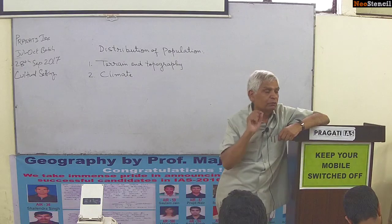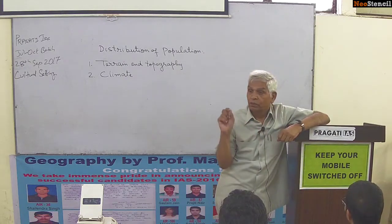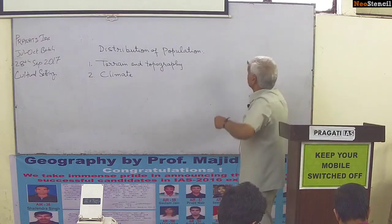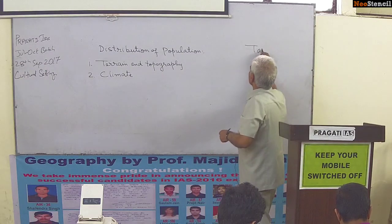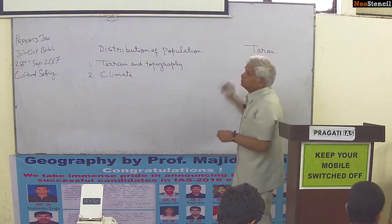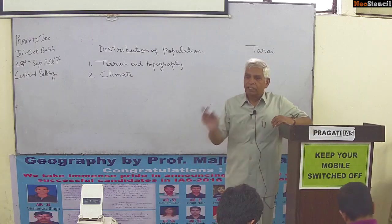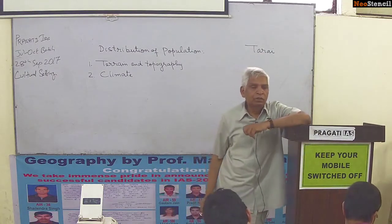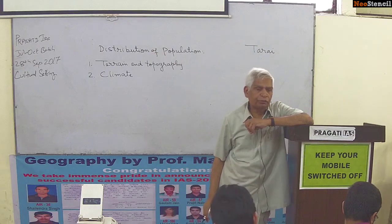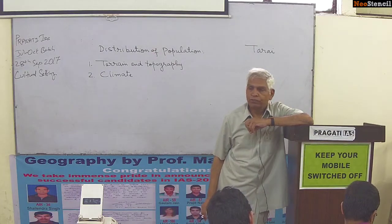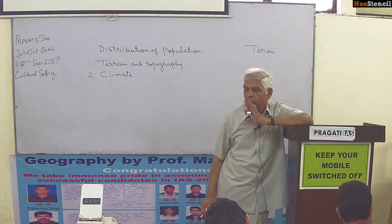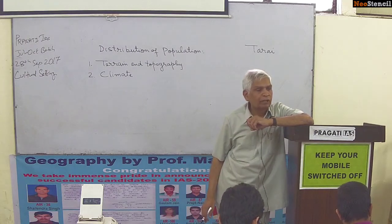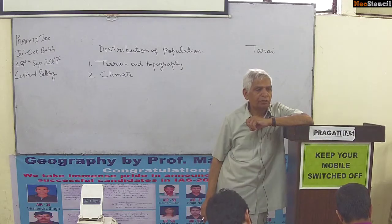Apart from Andaman and Nicobar, the Tarai region — a belt in front of the Shivaliks — is also relevant. It is infested with mosquitoes, which survive well where moisture and temperature conditions are favorable. As a result, the Tarai belt of India is also sparsely populated.